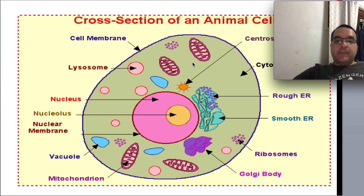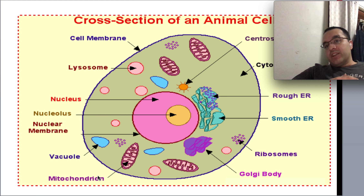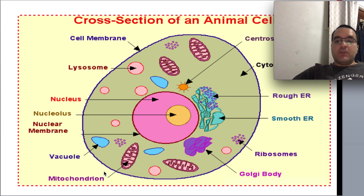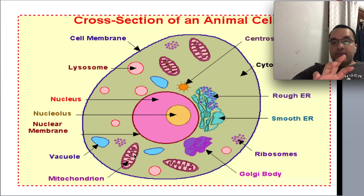Outside the nuclear membrane and between it and the cell membrane, there are numerous organelles. Starting from the top, we can see mitochondria — these organelles are called the powerhouse of a cell. They provide energy for the cell to function properly. Just like we eat food and our stomach processes it, mitochondria generate energy that the cell requires for its normal function — like a power grid providing electricity to a factory.